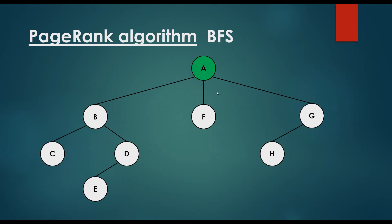Then we visit all the neighbors. We have three neighbors: B, F, and G, so we visit all of them. Then we're going to visit the children of the children of the root. For example, B has two children, C and D, so we're going to visit them.